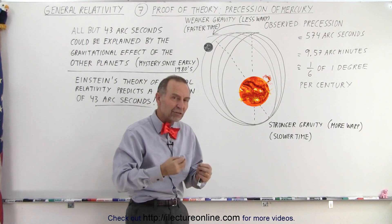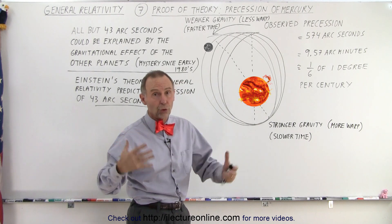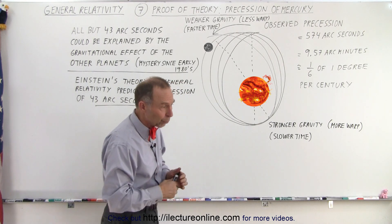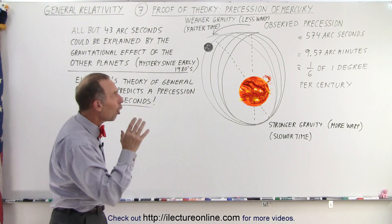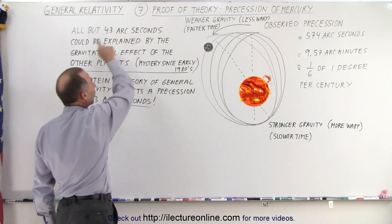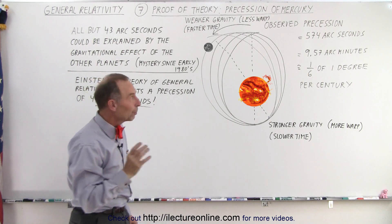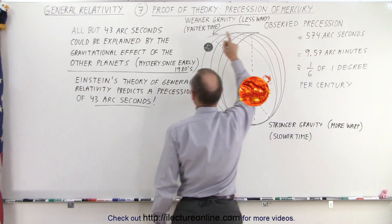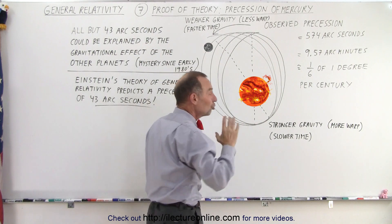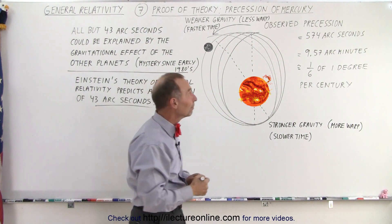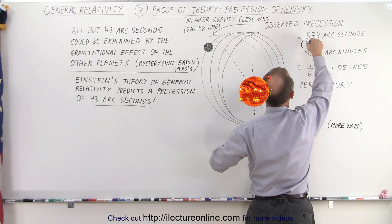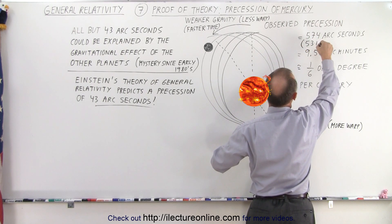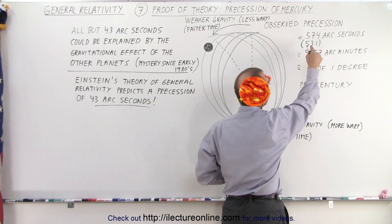When they calculated the effects of gravity according to Newtonian laws and Newton's equation of gravity, they were able to explain all but 43 arc seconds. In other words, the precession of 574 was 43 arc seconds more than they could calculate. If we subtract 43 from that, the calculated number should be 531 arc seconds.